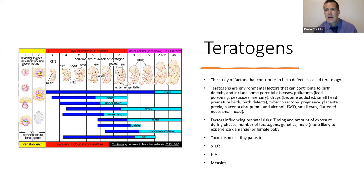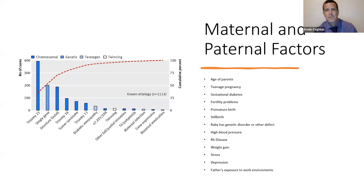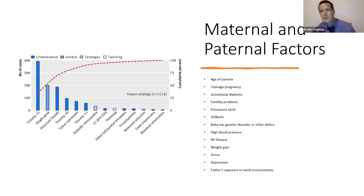There's also toxoplasmosis, which is a tiny parasite that affects about 60 million Americans according to the book. Sexually transmitted diseases can affect babies — HIV can be passed down, and things like measles can be detrimental for children. There are also maternal and parental factors. The age of the parents is a big deal — as a man becomes older, the viability of sperm tends to decline. Same for the female's body. That's why birth defects tend to increase after a certain age. Teenage pregnancy is also a factor because the female's body is not necessarily fully formed, and getting pregnant early can have detrimental effects on both the mother and baby.